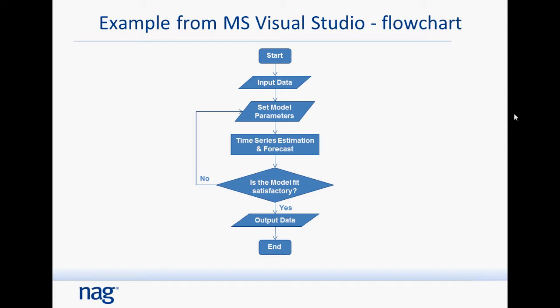Before I do that, here's a flowchart which describes how it works. Firstly, the user needs to supply some input data, then set ARIMA model parameters. Once that's done, the NAG routines perform the estimation and forecast. After that, the user needs to answer whether the model fit is satisfactory or not. If it's not, we go back and set different model parameters, do the estimation and forecast again, repeating until the model fit satisfies our needs. Once it's done, the routine will return output data and the results and finish.